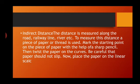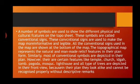Twist the paper along curves, being careful that the paper does not slip. Then place the paper on a linear scale. This is the simple method to find out the indirect distance — follow the road line, the railway track line, and so on.